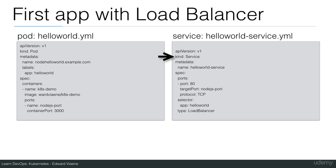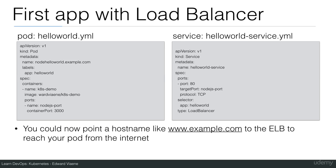This YAML file is of kind service. It has a name — hello world service — and it also has a spec. I will go over the spec in detail in the demo. Just remember that you can have different services. This service is of type load balancer and will run an ELB. If you run this pod and this service, you could then point a hostname like example.com to the ELB to reach your pod from the internet. This is the way to make your application available to the internet. I will show you all the details in the next demo.